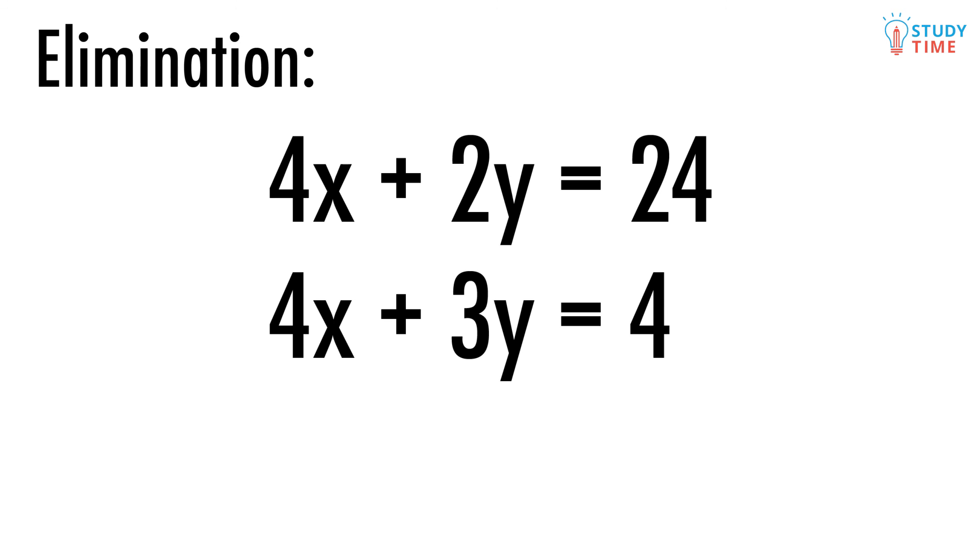We can multiply everything in the first equation by 2 so that we have 4x plus 2y equals 24. Now we subtract the second equation from the first term by term: 4x minus 4x is zero, 2y minus 3y is negative 1y, and 24 minus 4 is 20. So we have negative 1y equals 20, so close.